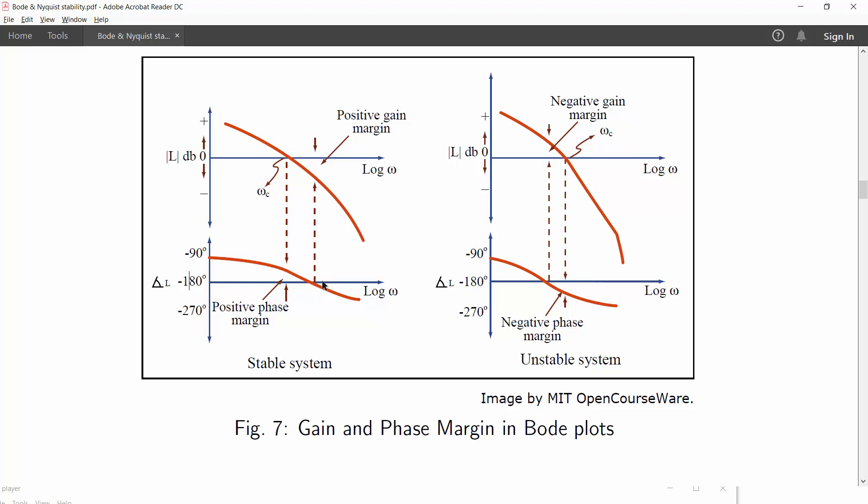Now we extend a line like this at Omega GC, the gain crossover frequency towards the phase plot till minus 180 degree line is met. So this measure between minus 180 degree line and the phase plot is the phase margin. So this distance gives the value of phase margin in degrees.